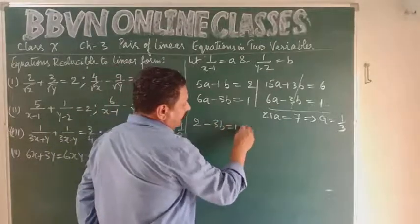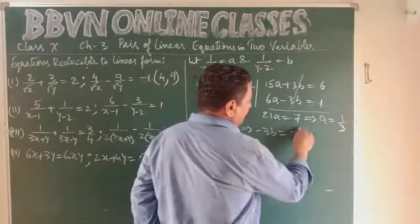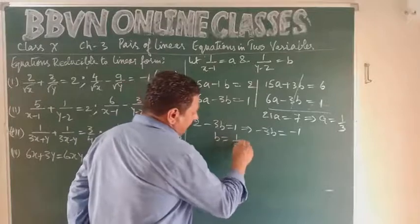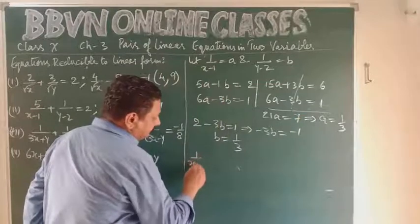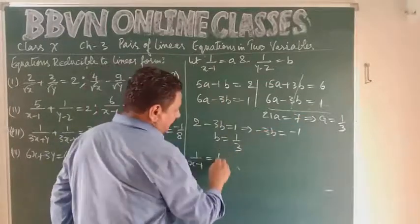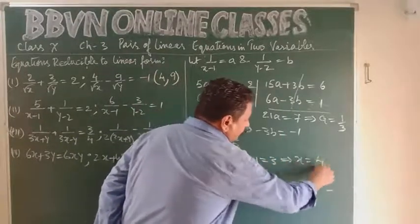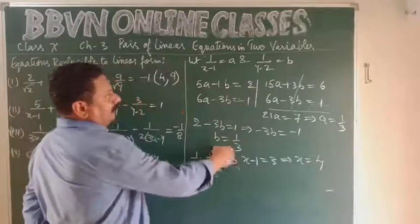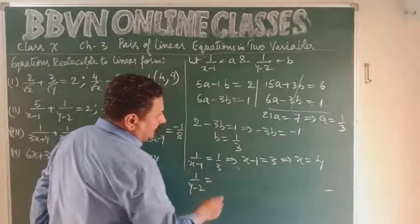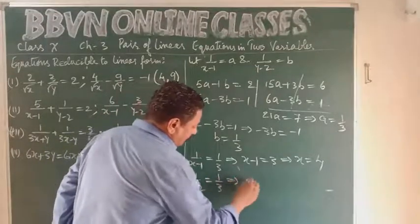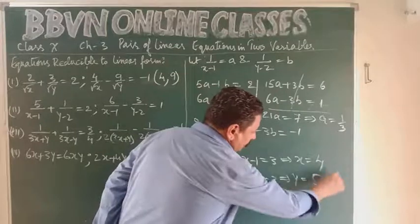Substituting A = 1/3 into the second equation: 6×(1/3) - 3B = 1, so 2 - 3B = 1, giving 3B = 1 and B = 1/3. Now back-substituting: 1/(x-1) = 1/3, so x - 1 = 3 and x = 4. For B: 1/(y-2) = 1/3, so y - 2 = 3, giving y = 5.